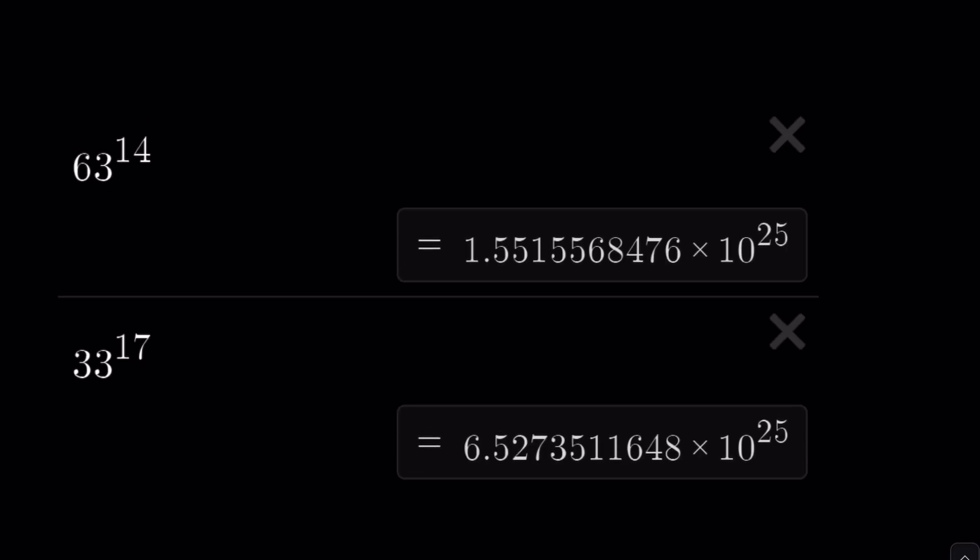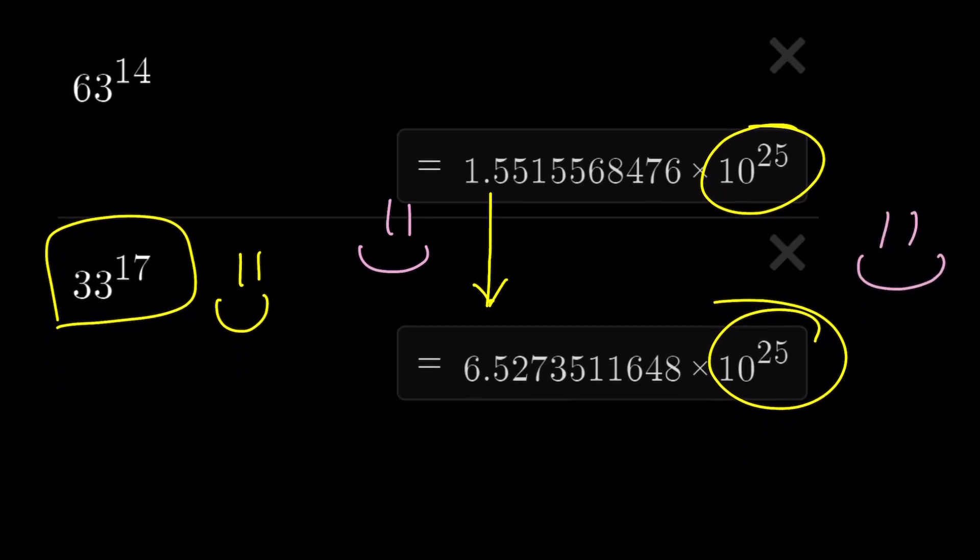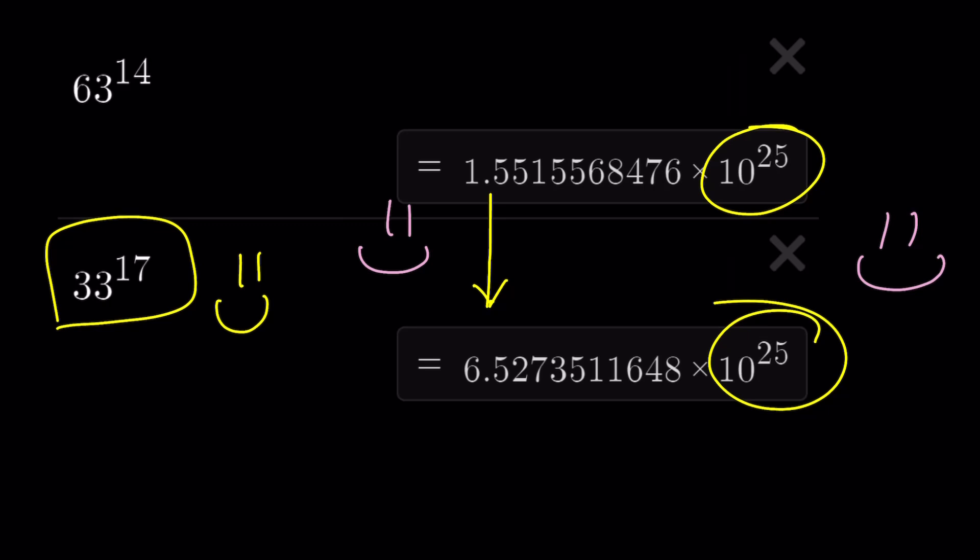So, the numerical values are actually pretty close, because look at the order of magnitude. They both have 10 to the power of 25, and kind of one of the numbers, the larger one, obviously. This one happens to be maybe about roughly four times the smaller number. And, this brings us to the end of this video. Thank you for watching. I hope you enjoyed it. Please let me know. Don't forget to comment, like, and subscribe. I'll see you next time in another video. Until then, be safe, take care, and bye-bye.